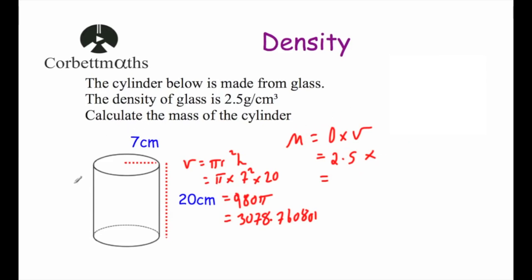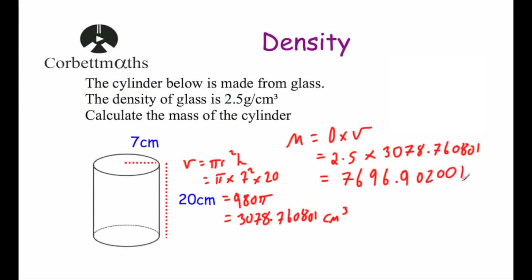Going back: mass = density × volume, so density 2.5 times the volume 3078.760801 (kept in the calculator display). That gives 2450π, or as a decimal, 7696.902001 grams. Since the density was in grams per centimeter cubed, the mass is in grams. You might prefer to express this in kilograms: approximately 7.697 kilograms, or rounded to 7.7 kilograms, depending on what the question asks for.